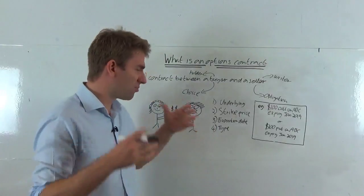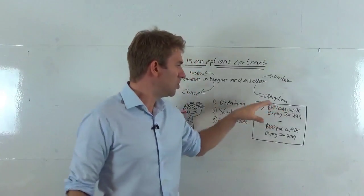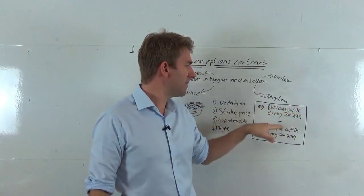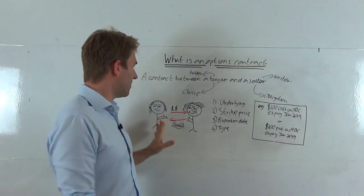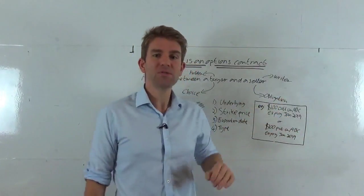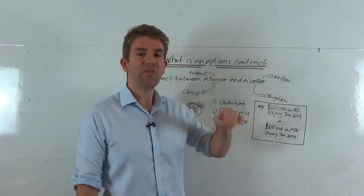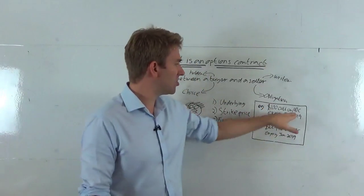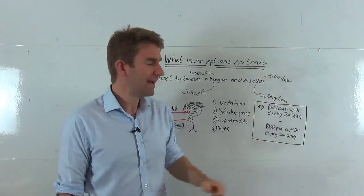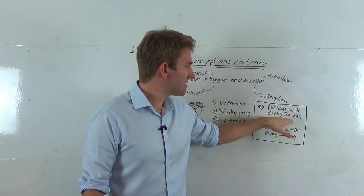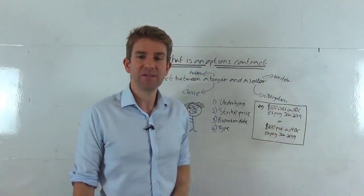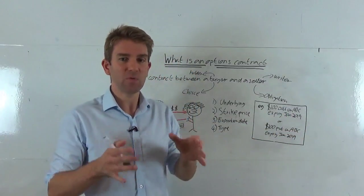Let's have a look at an example, a brief example. So you've got a $100 call in ABC expiry January 2019. So the buyer is saying, Hey, what I want to do here is I want the option to purchase ABC stock at the price of $100 at January, 2019. So to be very specific with what he wants.